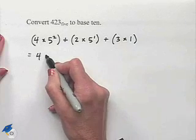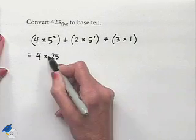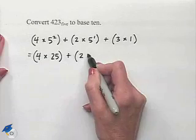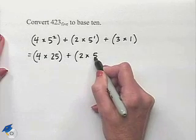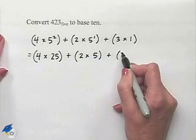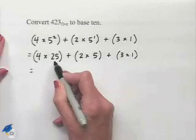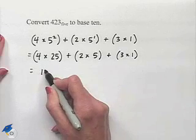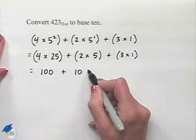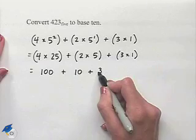Now we evaluate. 4 times 25 in our first set of parentheses, 2 times 5 in our second set of parentheses, 3 times 1 in our third set. 4 times 25 is 100, 2 times 5 is 10, and 3 times 1 is 3.